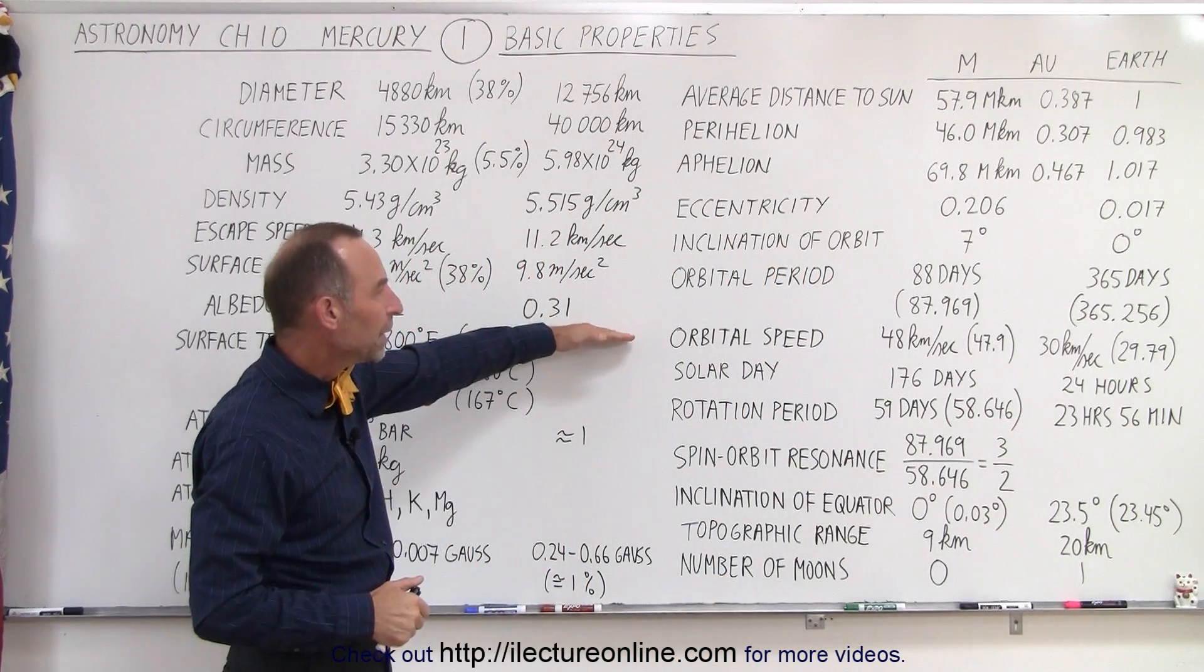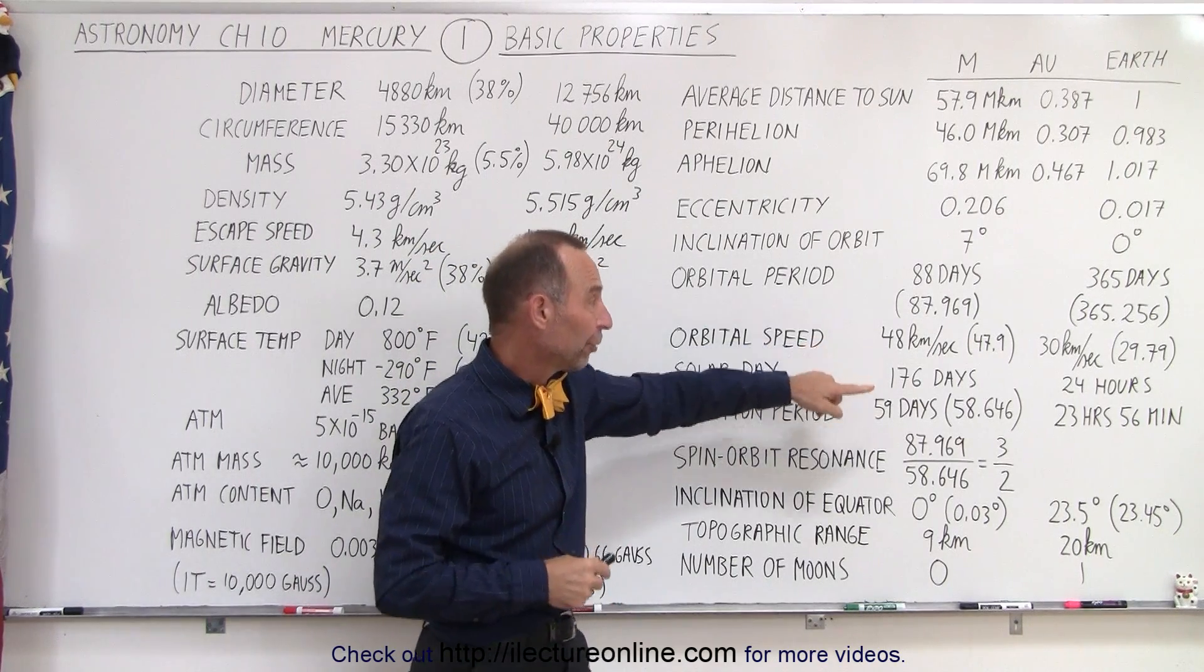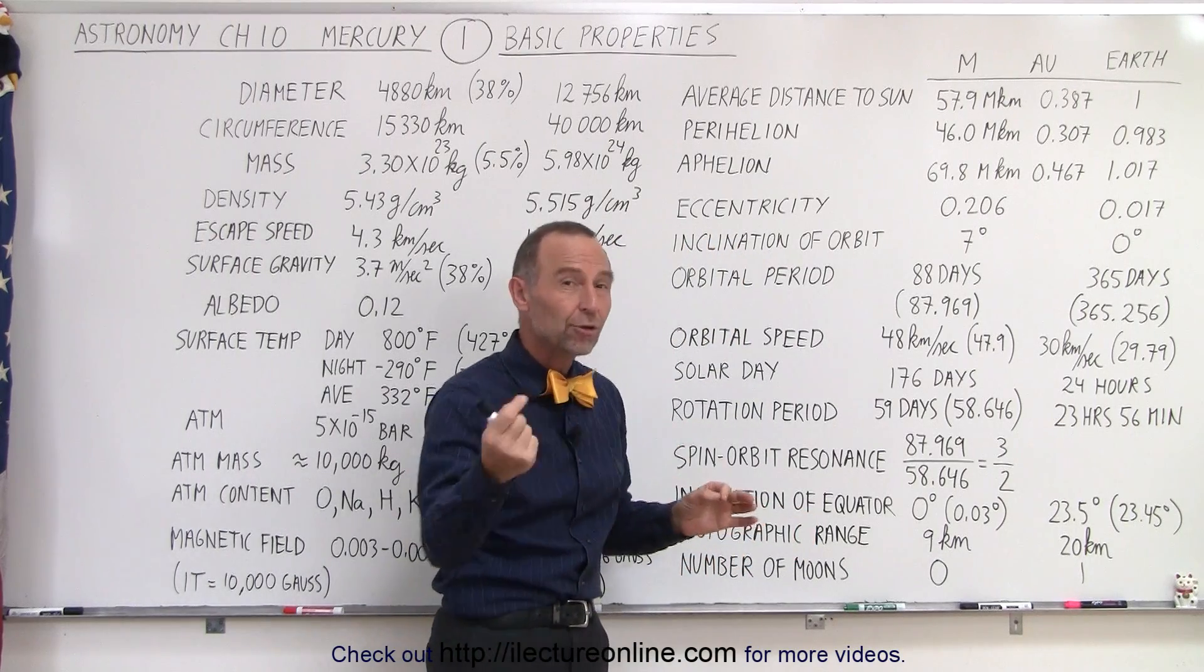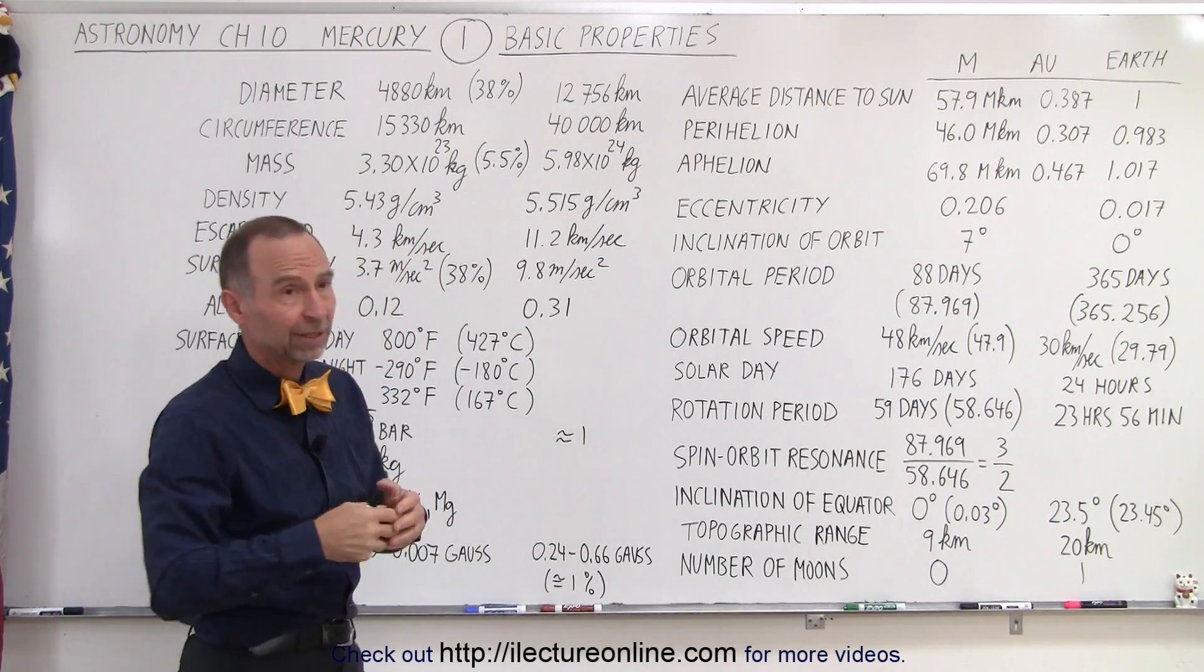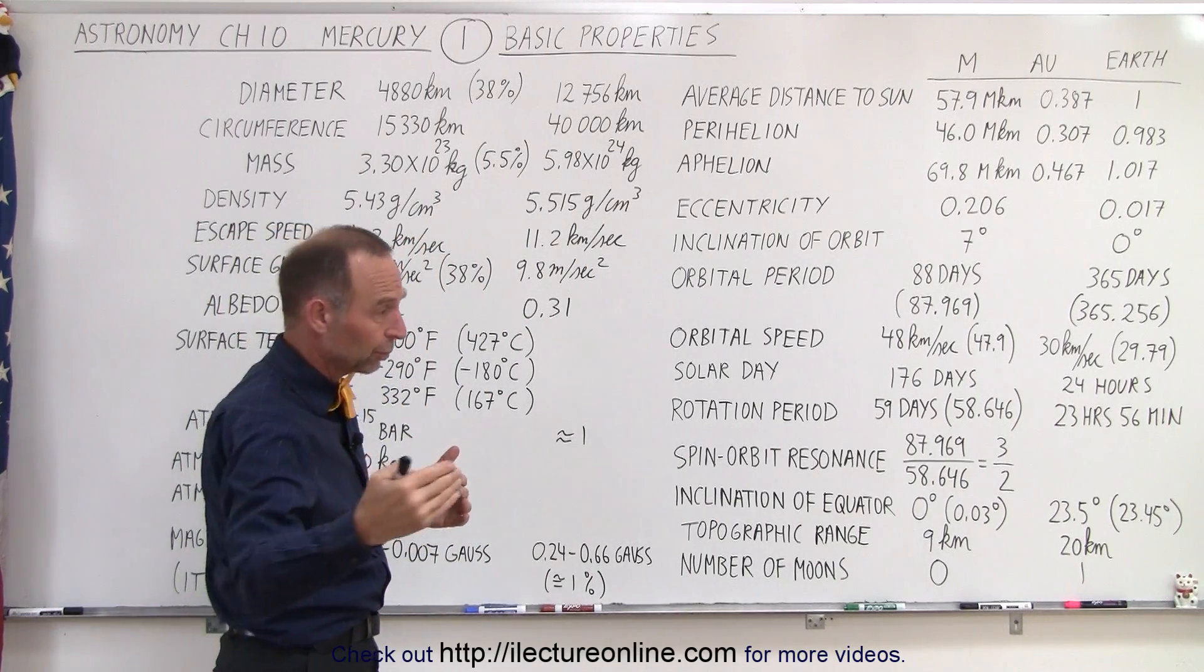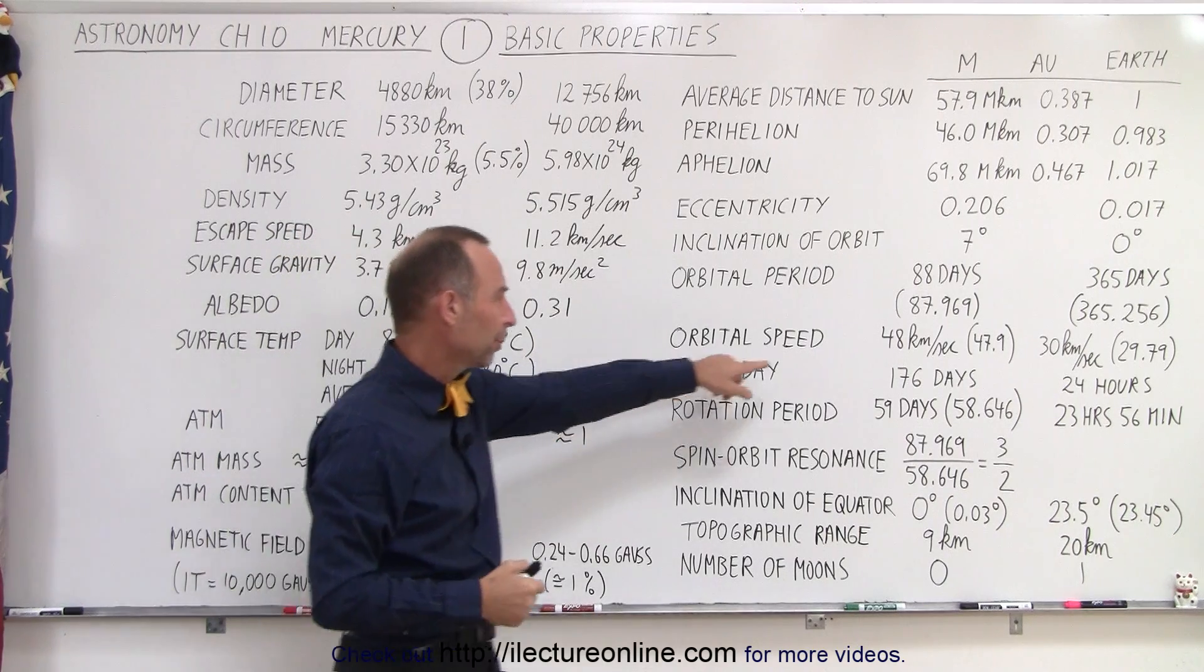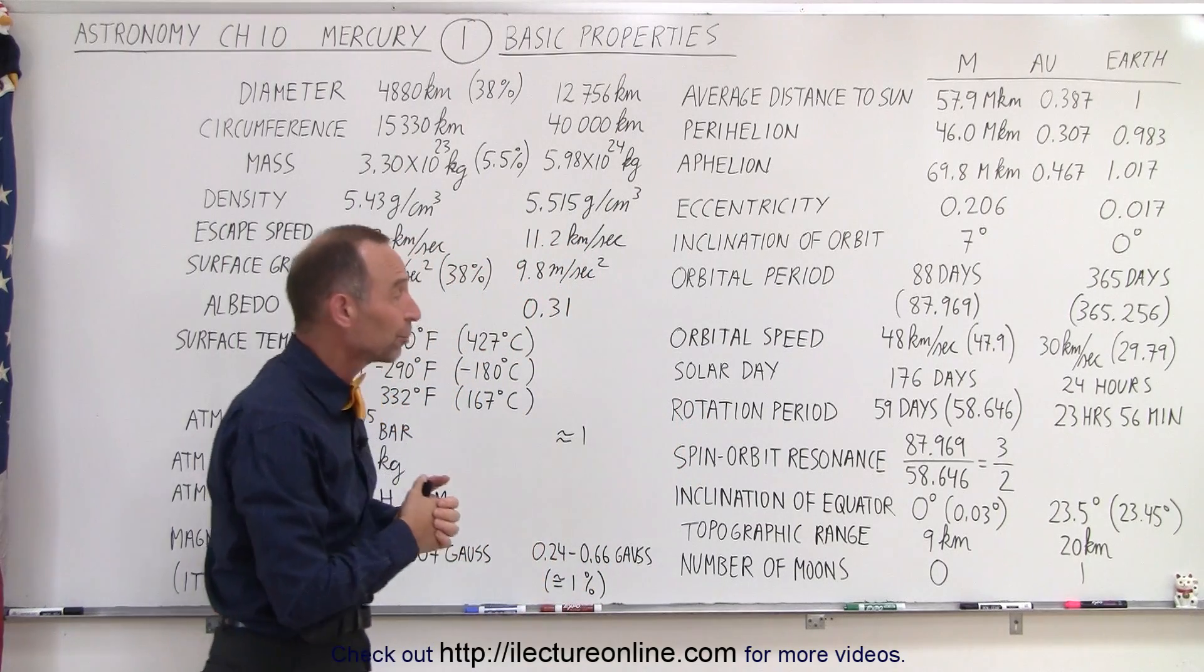The orbital speed, notice it's quite quick. It travels at 48 kilometers per second versus the Earth, 30 kilometers per second. Anytime you're closer to the Sun, you have to travel faster or you'll fall into it. If you travel slower, you'll fall into it. You go faster, you move away from it. So in order to stay in orbit for Mercury, you have to travel at 48 kilometers per second.